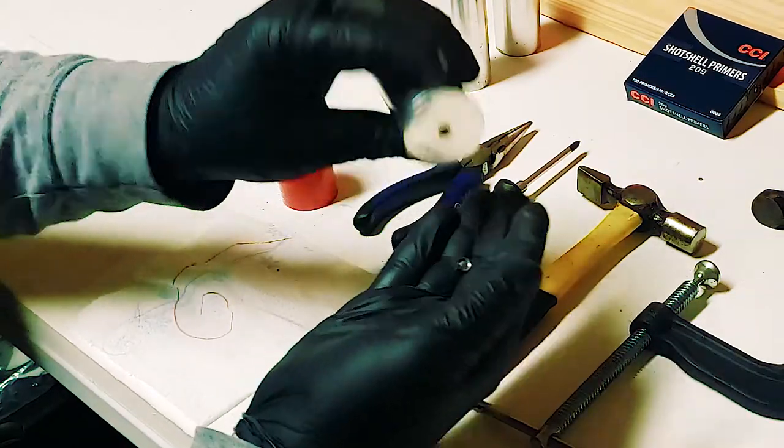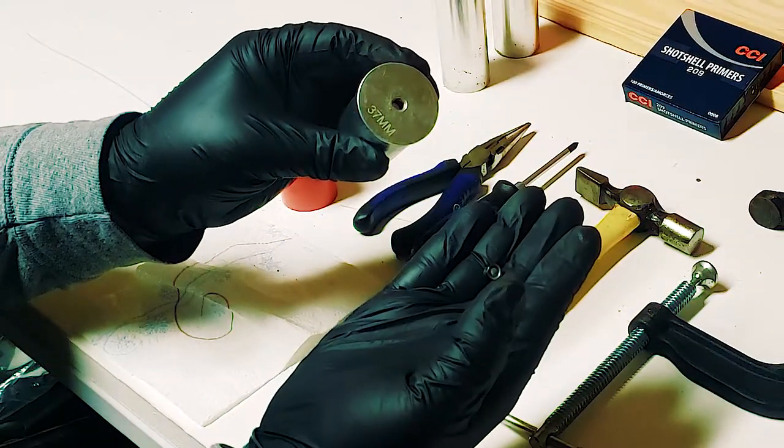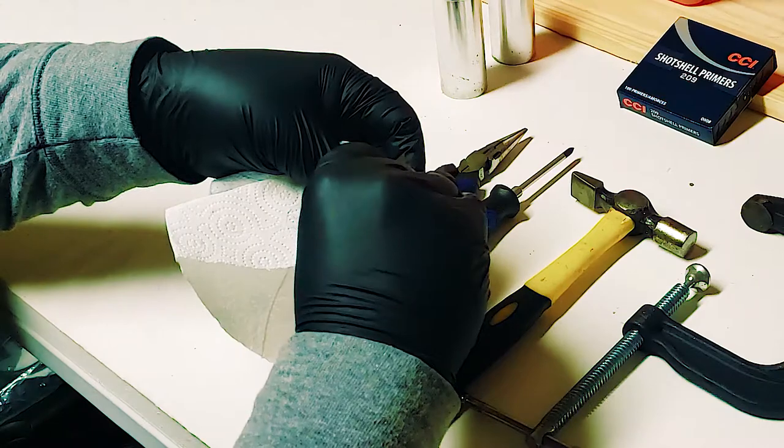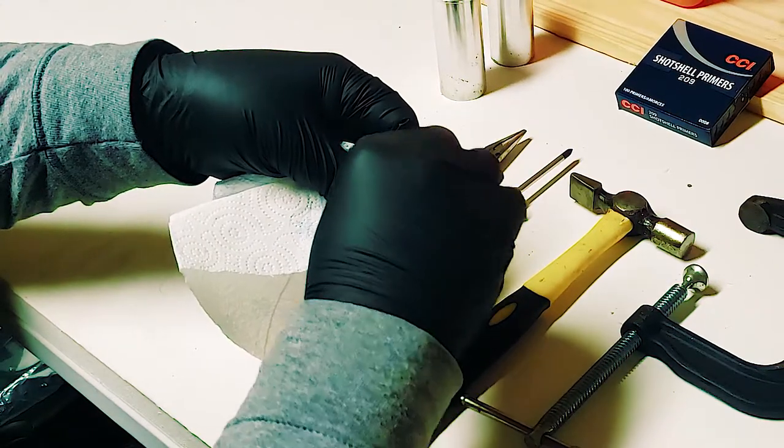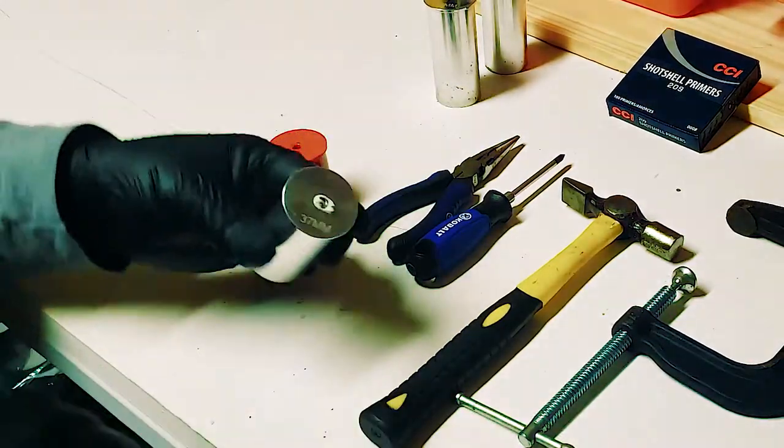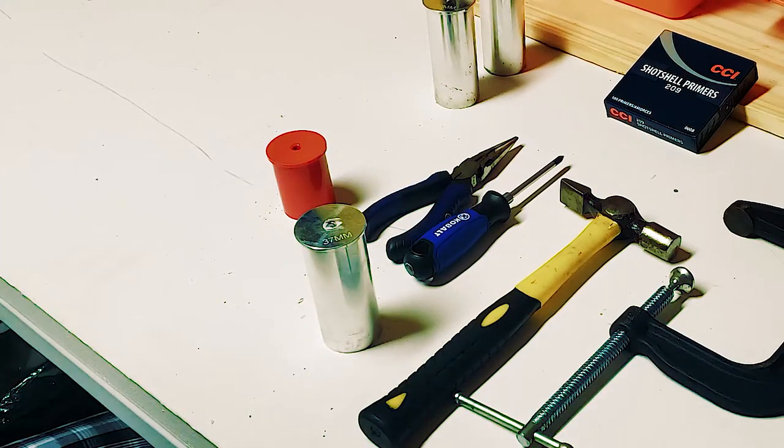Just lay a small piece of the paper towel over the hole, insert the primer again, and rip away the excess paper. Now the 209 primer will stay in place until you're ready to use it.